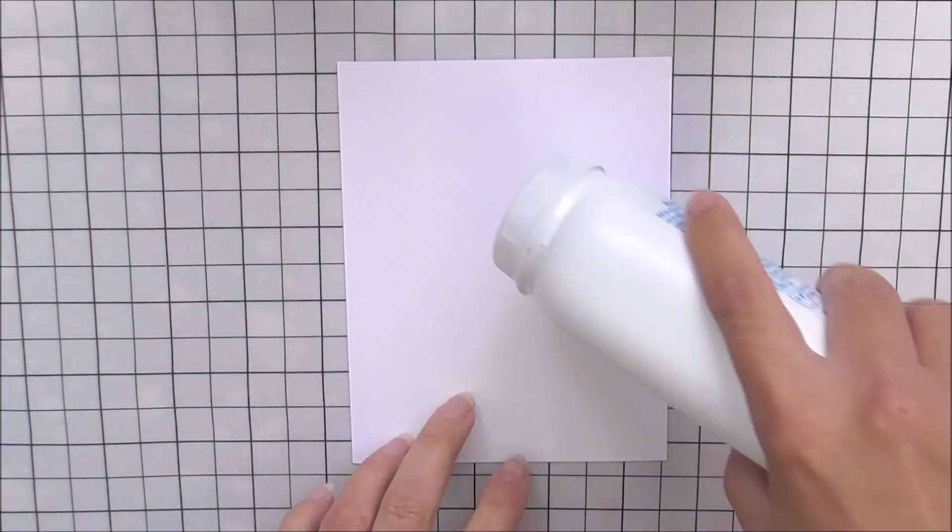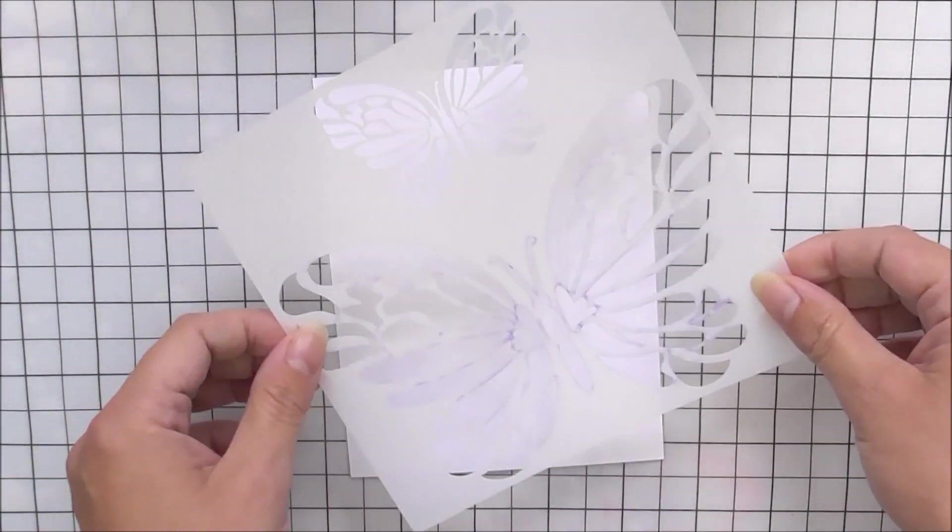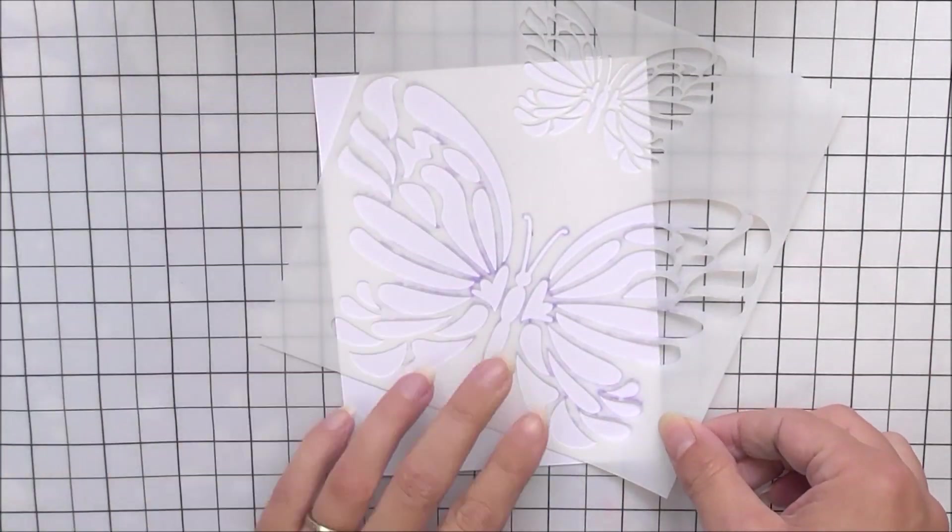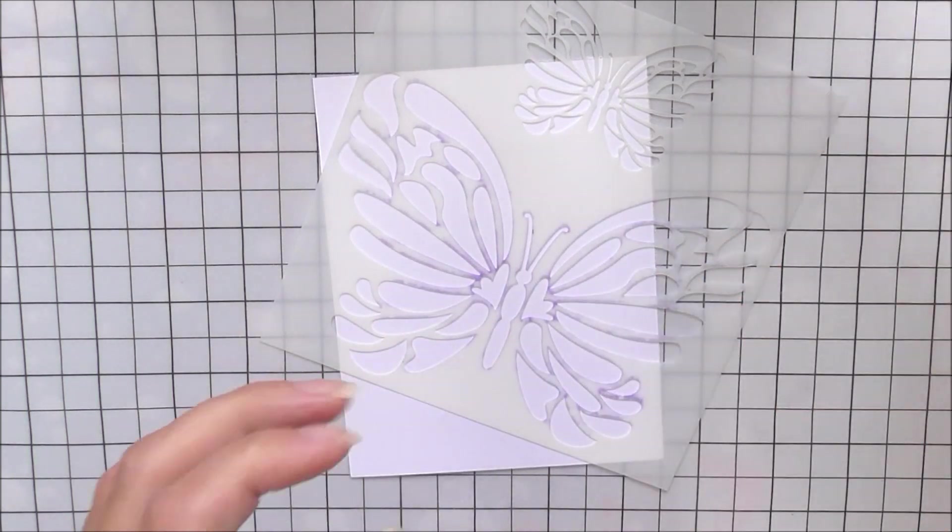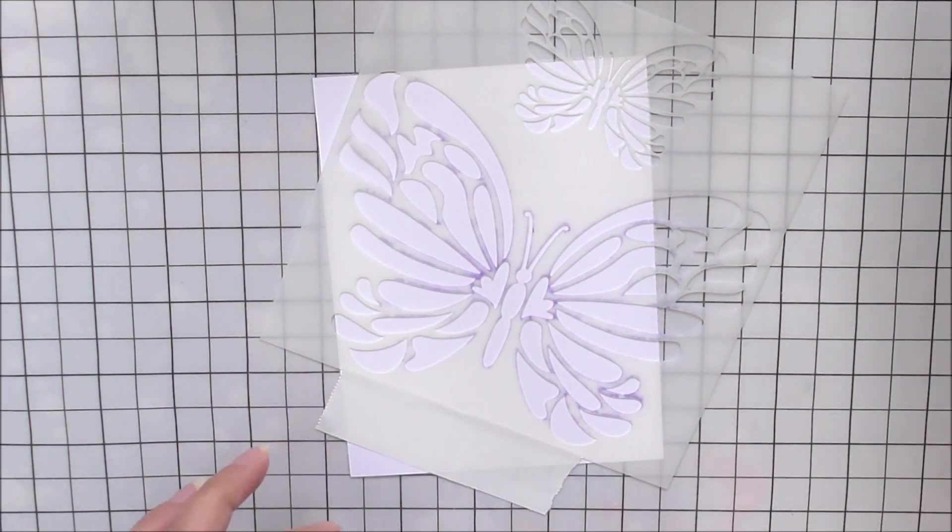To start with, I'm going to be starting with a panel of solar white cardstock, four and a quarter by five and a half. As I'm going to be embossing on it, I have added some anti-static powder, also known as baby powder, just to stop the embossing powder sticking where I don't want it.